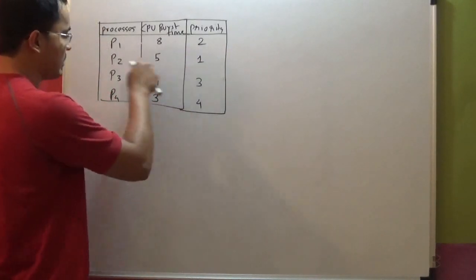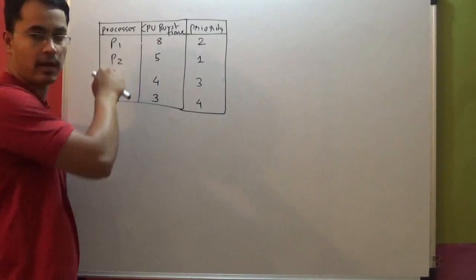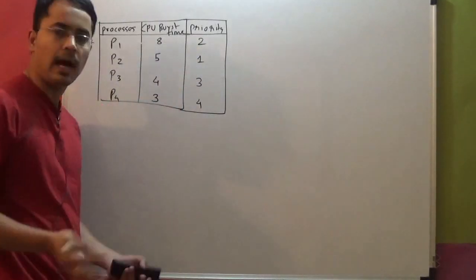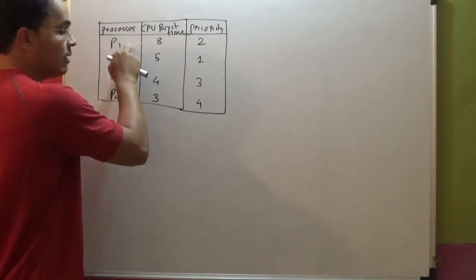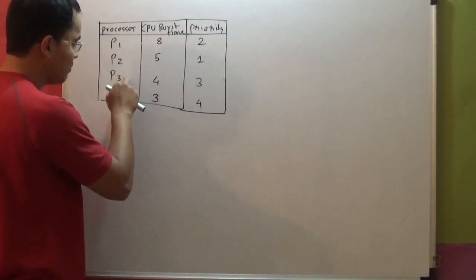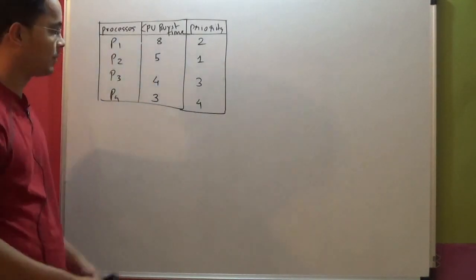So P2 is having highest priority, followed by P1, then P3, then P4. Alright, once we have all the data, now we must calculate the average turnaround time and average waiting time.